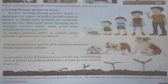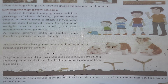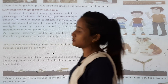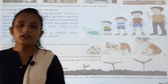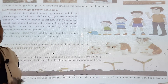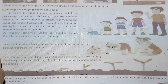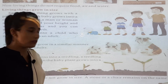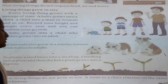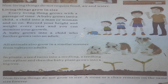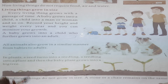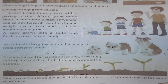Non-living things do not grow. A stone remains the same size forever. Non-living things cannot grow because they are non-living, man-made things. A chair cannot grow, a stone cannot grow.